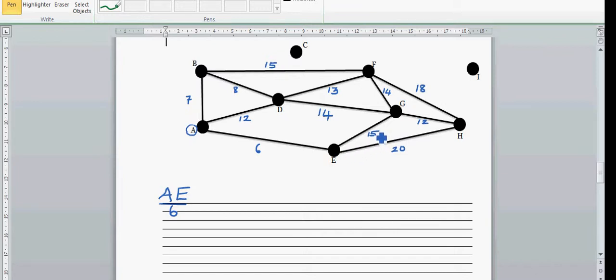A better option is going from E to G and G to H. So E to G is 15 and G to H is 12. From H, obviously you have to go to F. There is no other way - that is going to take 18.